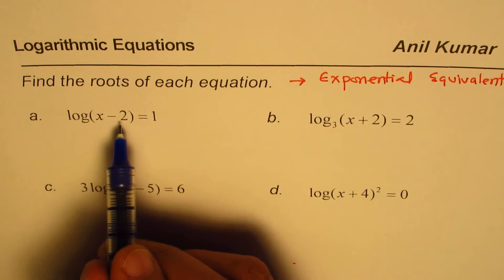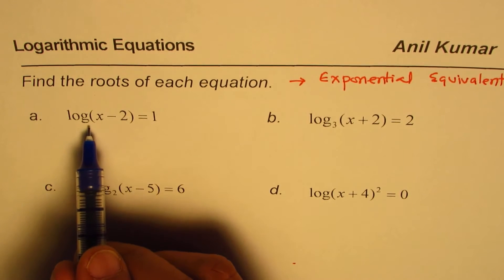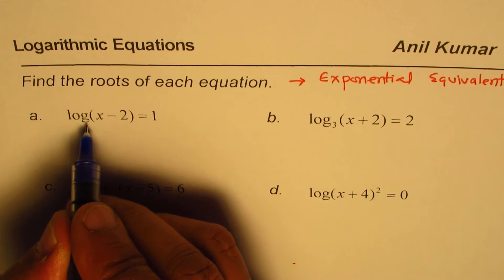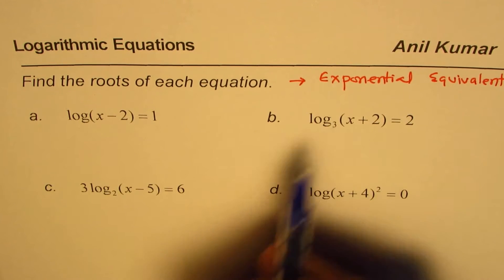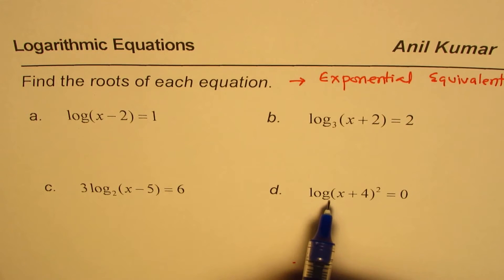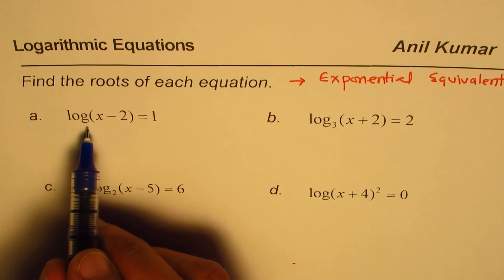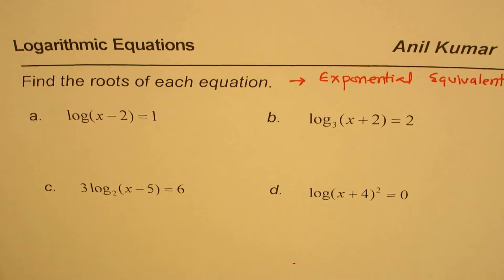Log x minus 2 equals 1. If I don't write anything, what is the base? Base is 10. In this case, base is 3 here, base is 2 here, base is 10 here. So log to the base 10 is by default.